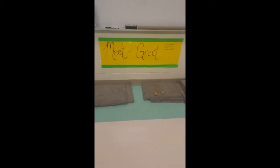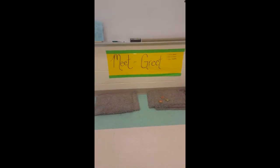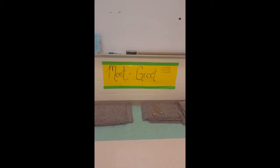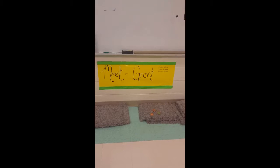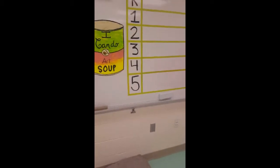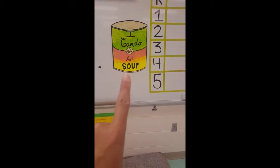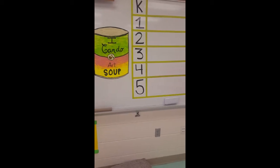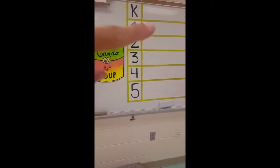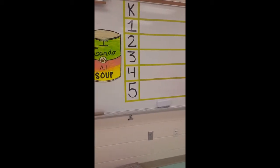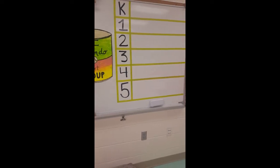First, when you walk in, you're going to come straight into the door and sit right here where you're probably sitting right now in our meet and greet area. This is where you're going to find out our standards and what we're doing today. They will all be listed right next to the 'I can do' soup. So K looks there, first looks there, second, third, and so on. This is always where you can look to find out what our standards are for today.